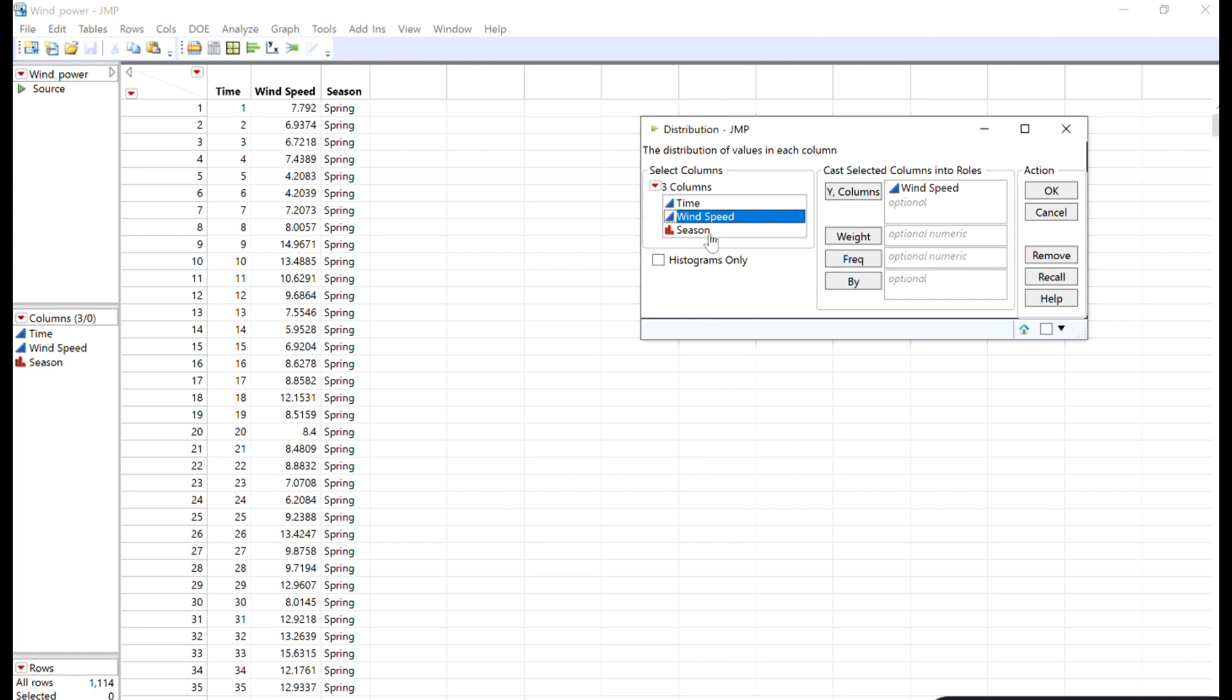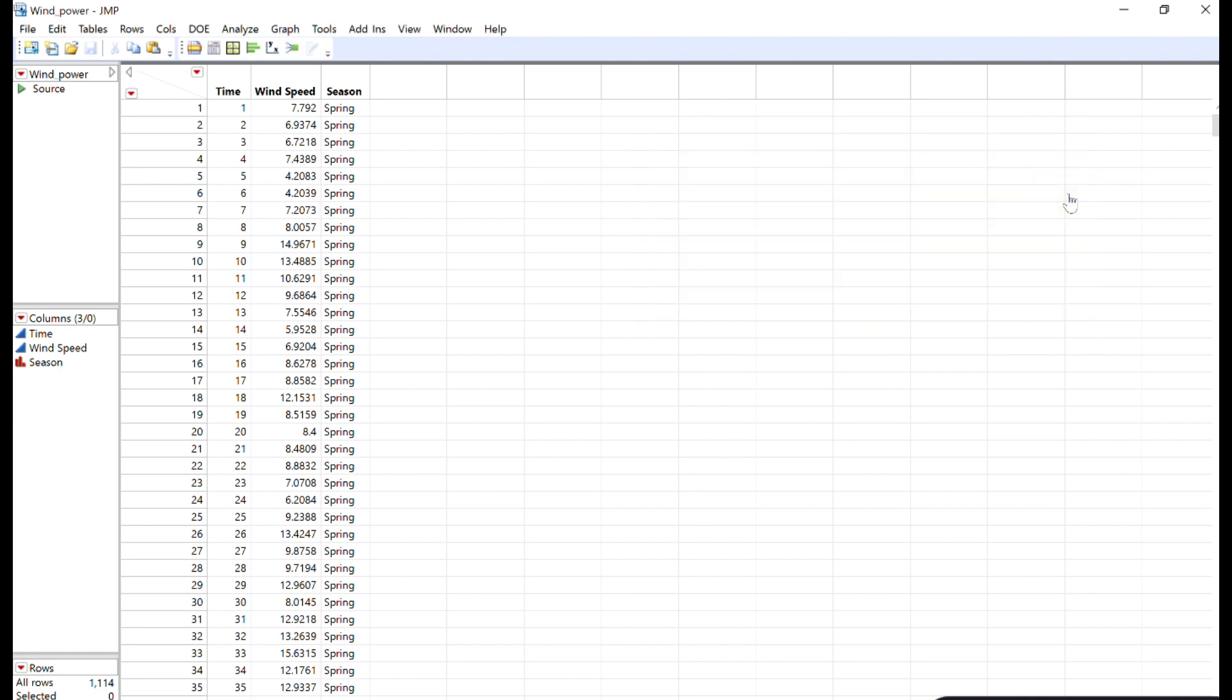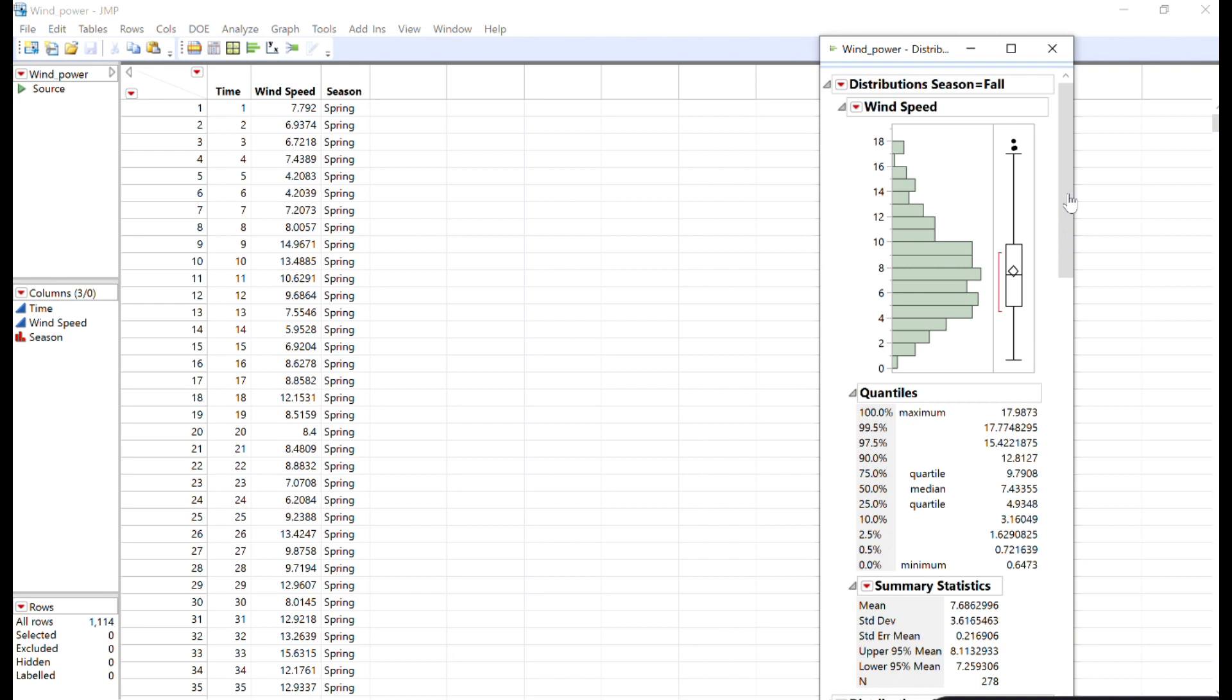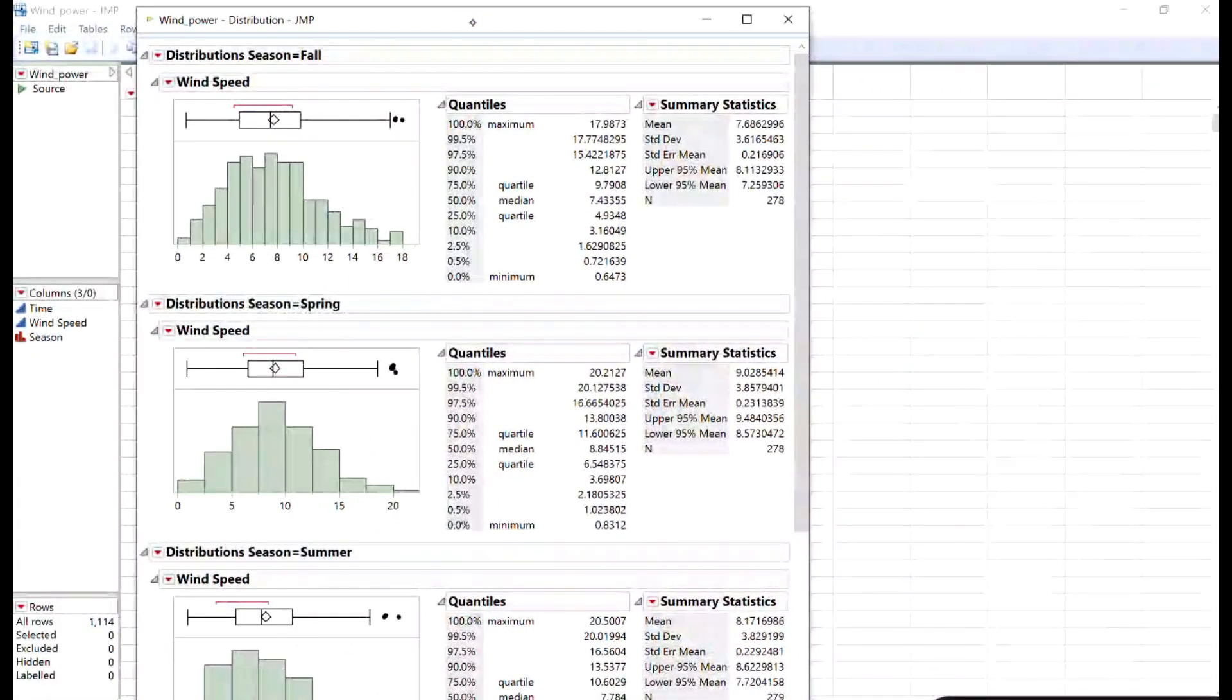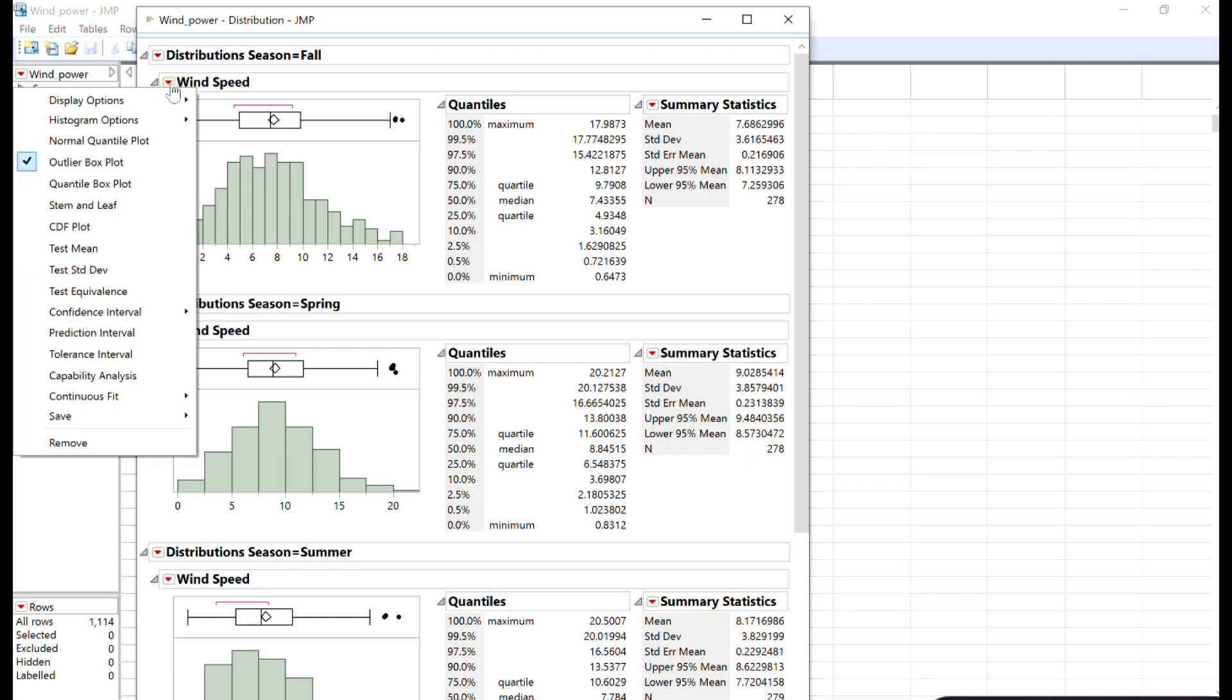I'm going to put season in the by box and click OK. Now it's going to give me a separate output for each season. I'll go ahead and stack them all. Notice that this is just giving me exactly the same analysis for each one. If I wanted to do the test for each of these categories, I could do that. If I wanted to do the confidence interval for each of the categories, then I could.